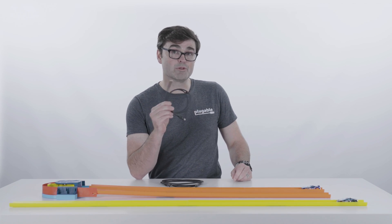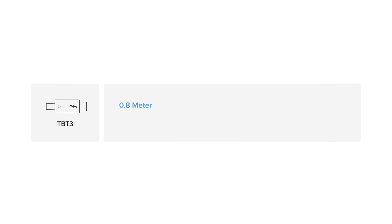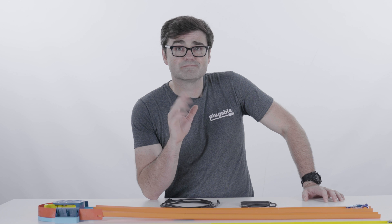Take the pluggable passive Thunderbolt 3 cable, for instance. At 0.8 meters, you're transferring data at 40 gigabits per second. Now stretch this cable out to 2 meters, and you're only looking at 20 gigabits per second.